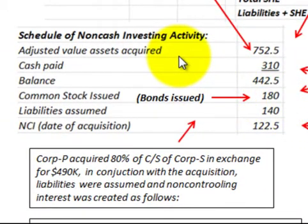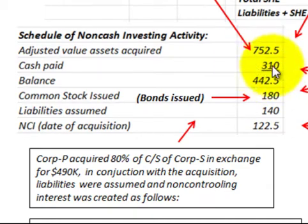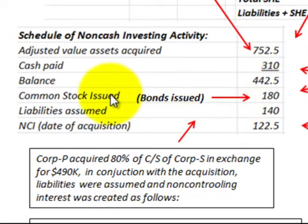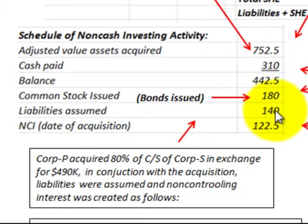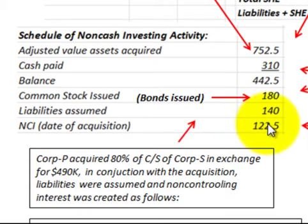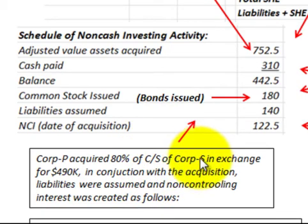Going over the supplemental schedule again: adjusted value of assets acquired, cash paid to purchase the subsidiary, and the balance of $442,500 — the difference between $752,500 and $310,000. That balance is apportioned as common stock or bonds issued for $180,000, plus liabilities assumed of $140,000, plus non-controlling interest of $122,500. This is the supplemental schedule that must be disclosed for the acquisition of a subsidiary for consolidated financial statements.